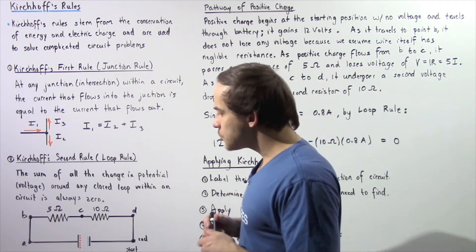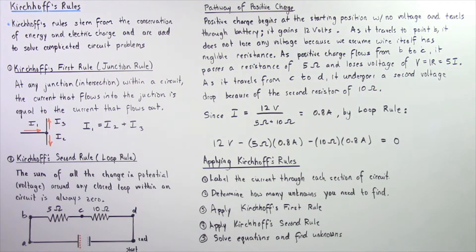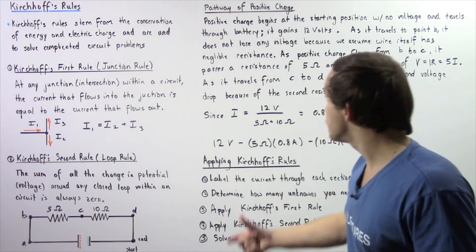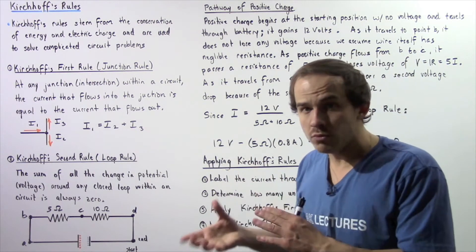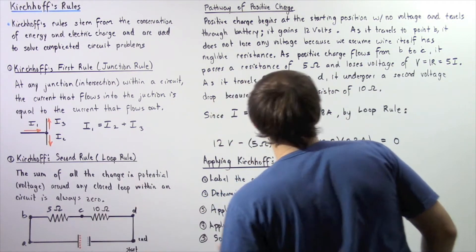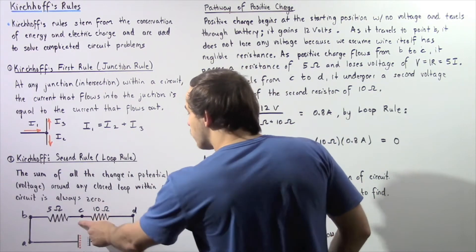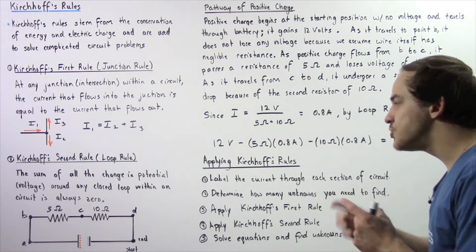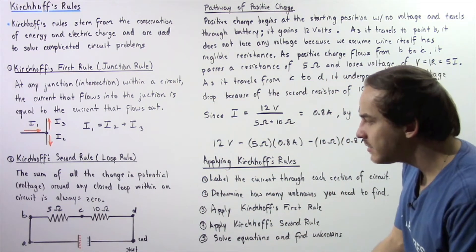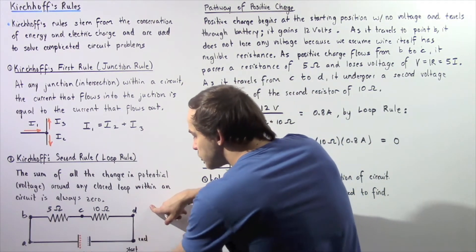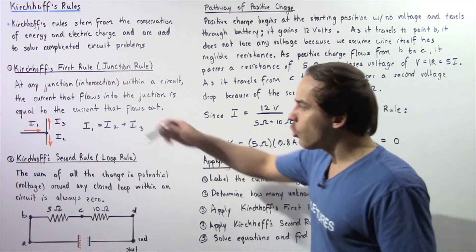When the positive charge flows from position B to position C, it passes a resistance of 5 ohms and loses a voltage of V = IR by Ohm's law — so it loses 5I volts. Finally, as the positive charge flows from location C to location D, it once again loses voltage due to the 10-ohm resistance. When it travels from D back to the initial position, the change in potential difference around the entire loop gives us zero, according to Kirchhoff's second rule.